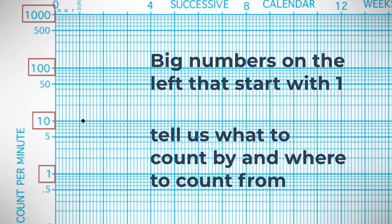Now we're at another big number on the left that starts with one. So anything above this we're going to be counting by tens, and we're going to count from 10. So 10, here's 20 per minute, 30 per minute, 40 per minute, 50 per minute, 60, 70, 80, 90, 100.